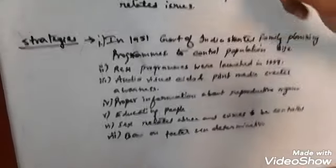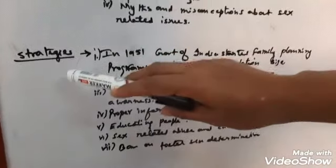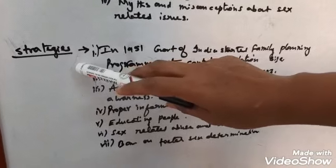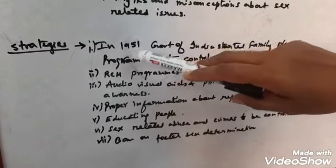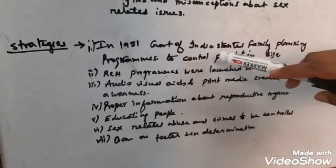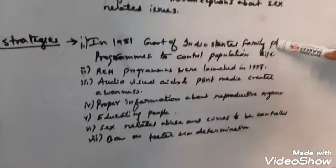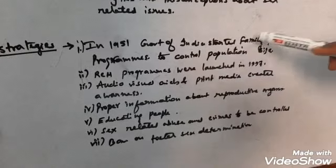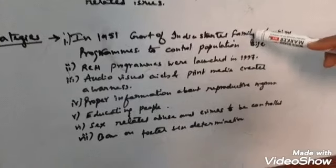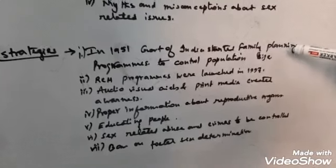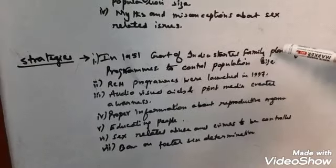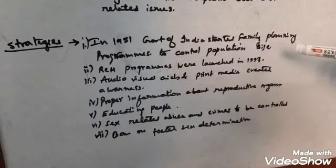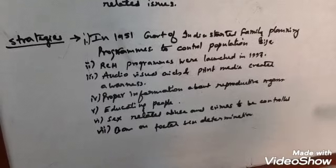Now you will learn about the strategies. Strategies of Reproductive Health. In 1951, after independence, the government of India started family planning program. This family planning program was started to cut down population, so the growing population should be restricted. That was a plan of the government of India for population control.